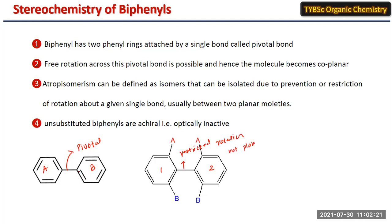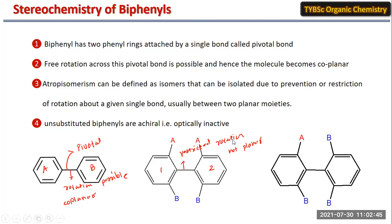When rotation is possible, these are coplanar molecules. For the unsubstituted biphenyl, free rotation is possible and the molecule is coplanar.